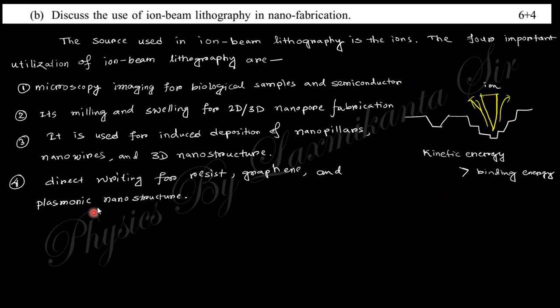Next we discuss the use of ion beam lithography in nano fabrication. Lithography means photolithography, electron beam lithography, ion beam lithography - all these things eject the signal on the material. Using a mask, you can fabricate different nanostructures. The difference is the source: X-ray, photon, electron, or ion.